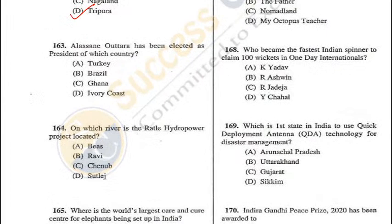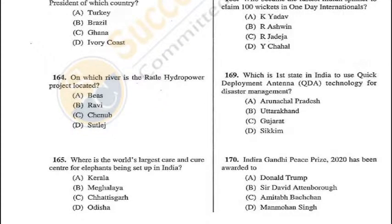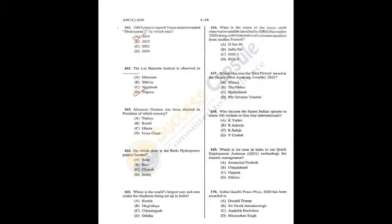Question 163: Lazane has been elected as President of Ivory Coast — D is the correct answer. Question 164: Ratle Hydro Power Project is on River Chenab in Kishtwar district of the UT of J&K — C is the correct answer. Question 165: World's largest care and cure centre for elephants is being set up in Thiruvananthapuram, Kerala — A is the correct answer. Q165 = A, Q164 = C, Q163 = D.